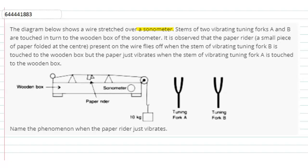It is observed that the paper rider, a small piece of paper folded at the center present on the wire, flies off when the stem of vibrating tuning fork B is touched to the wooden box, but the paper just vibrates when the stem of vibrating tuning fork A is touched to the wooden box.